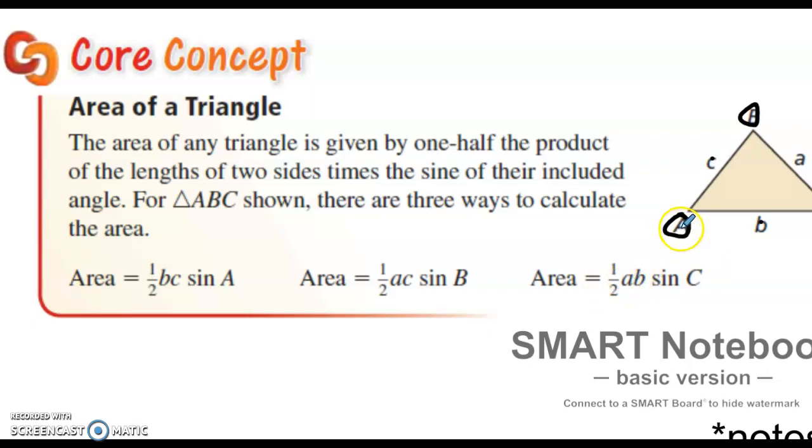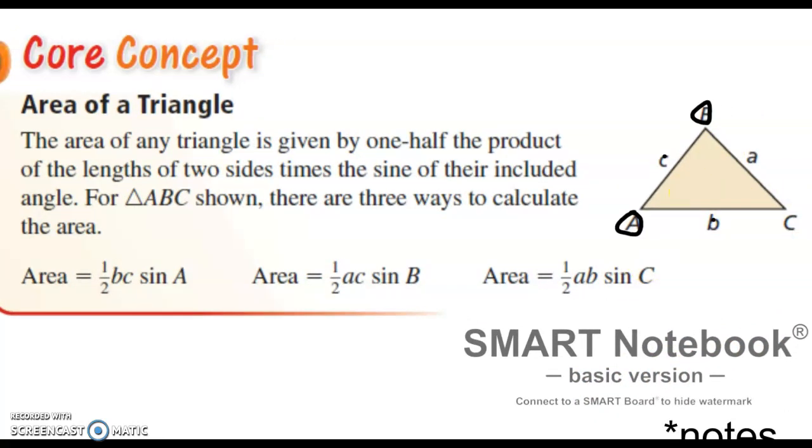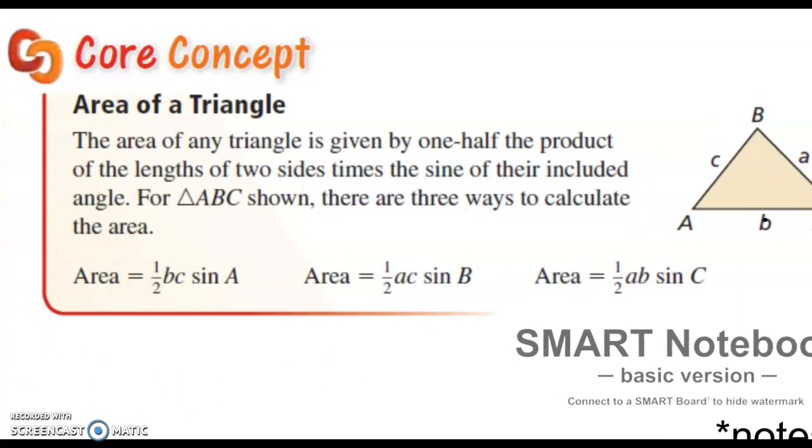Notice that the angle we're using is always different than the two sides we multiply together. This goes back to the geometry concept that when we label the triangle, side A is always opposite angle A, side B is always opposite angle B, and side C is always opposite angle C.